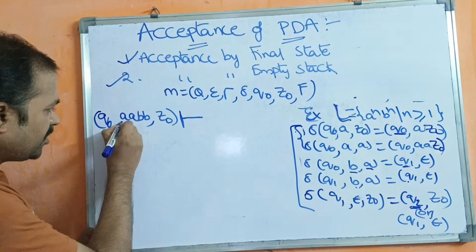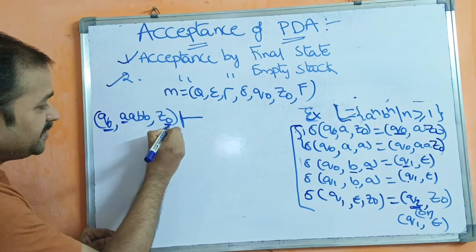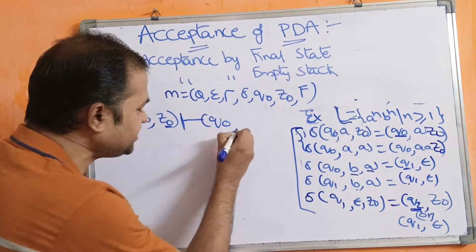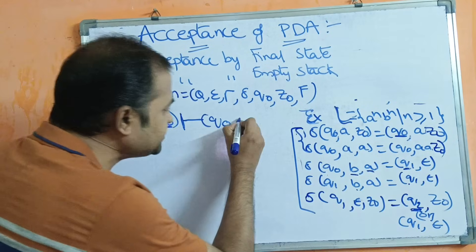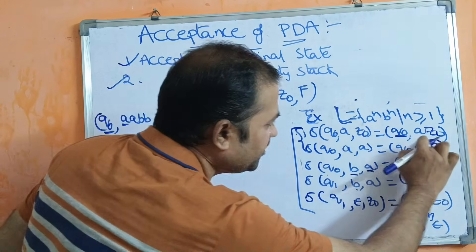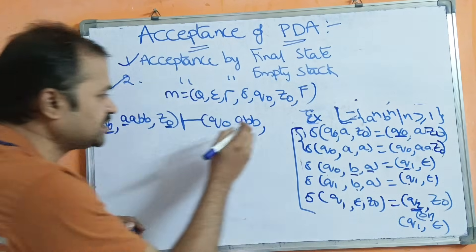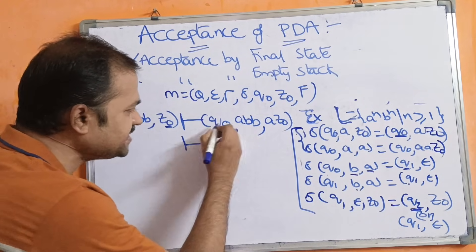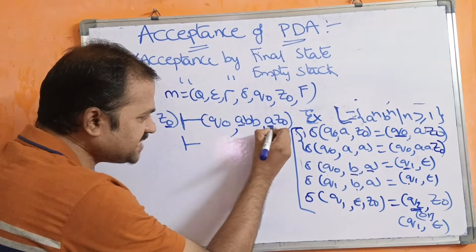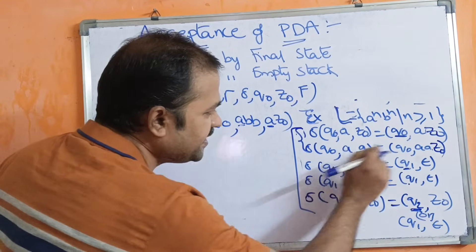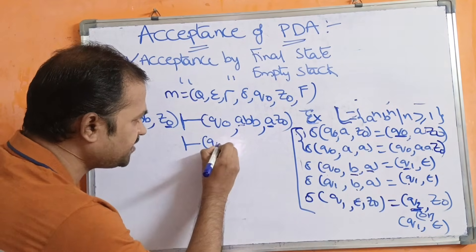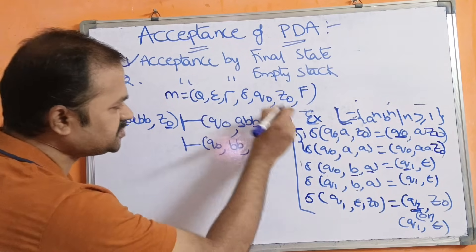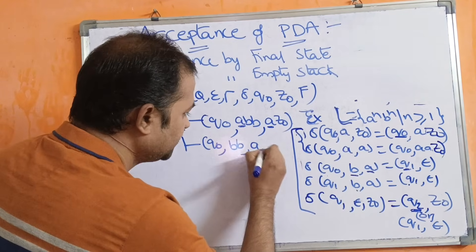Step 1: Current state is q₀, input symbol is a, stack topmost symbol is Z₀. Applying δ(q₀, a, Z₀): next state is q₀, a is processed, remaining string is abb, stack becomes a Z₀. Step 2: Current state is q₀, input symbol is a, stack topmost is a. Applying δ(q₀, a, a): next state is q₀, a is processed, remaining string is bb, stack becomes a a Z₀.